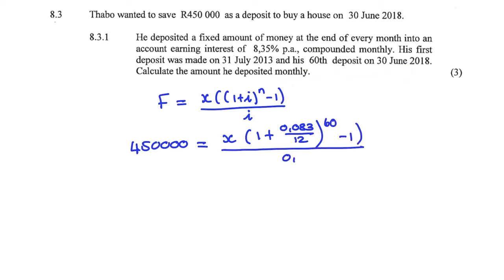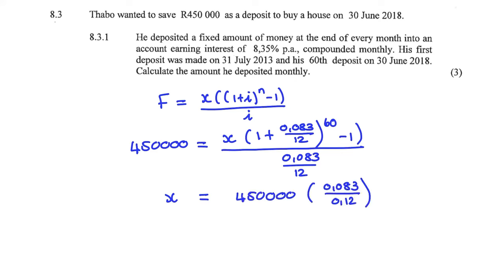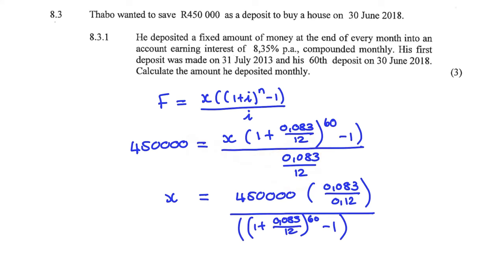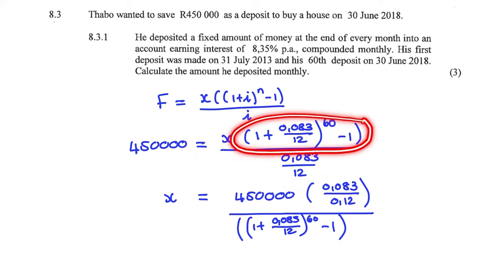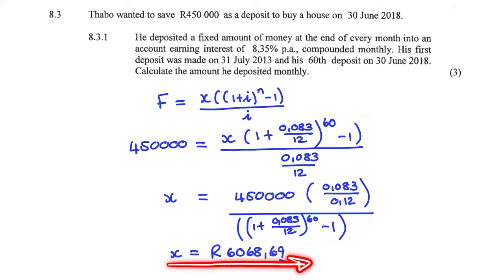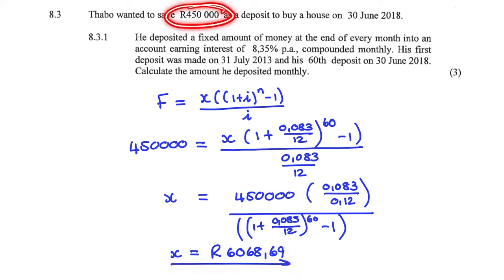Then I continue substituting i into my formula. And now in order to find X, I'll take 450,000 Rand, multiply it by the denominator of my formula, and divide that by the expression next to X in the numerator. That means that he deposited 6,068 Rand 69 cents per month into this account in order to grow to 450,000 Rand.